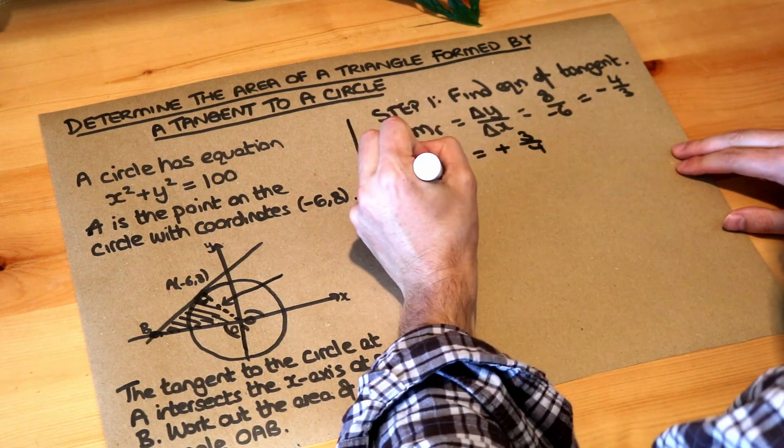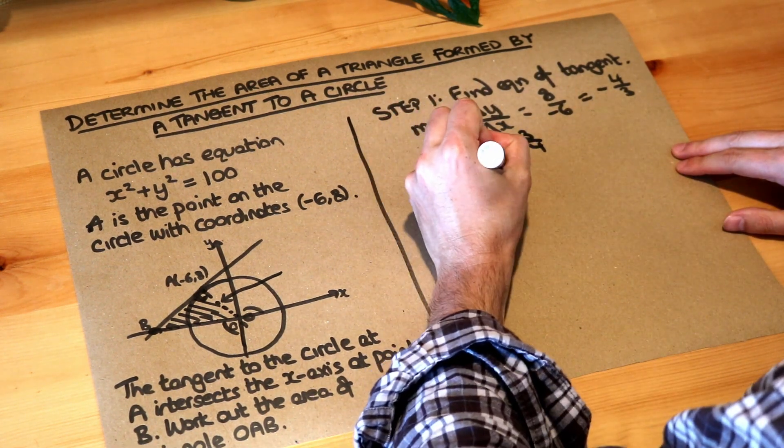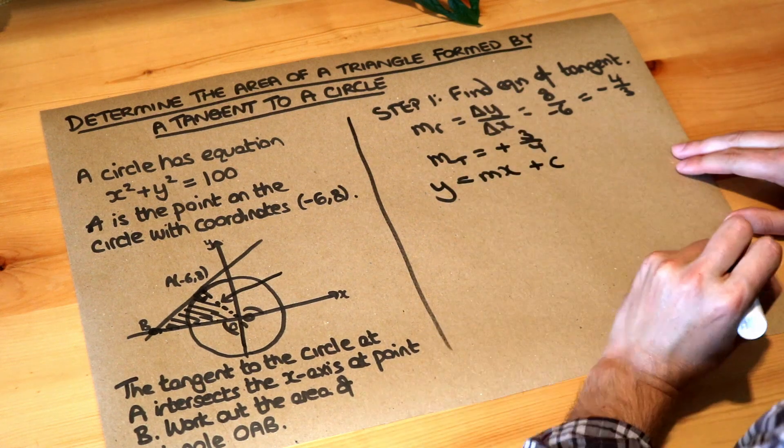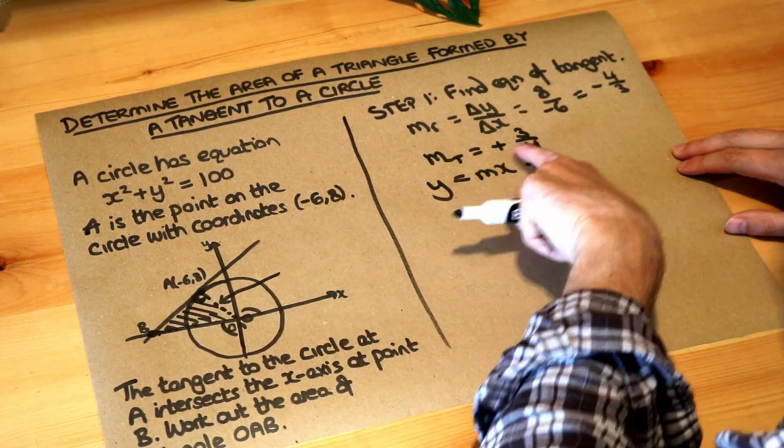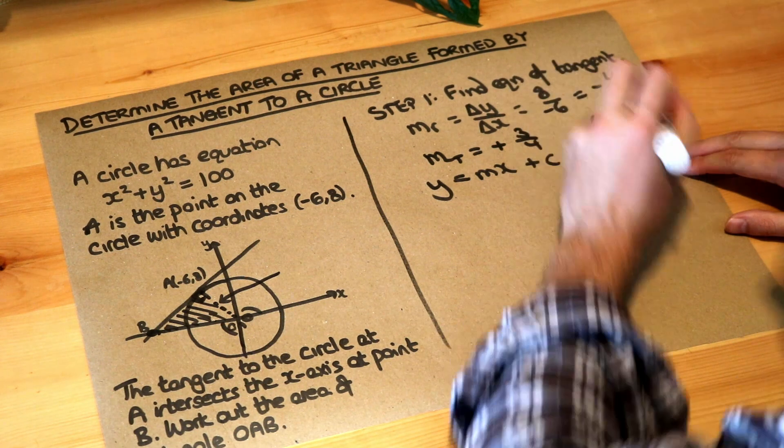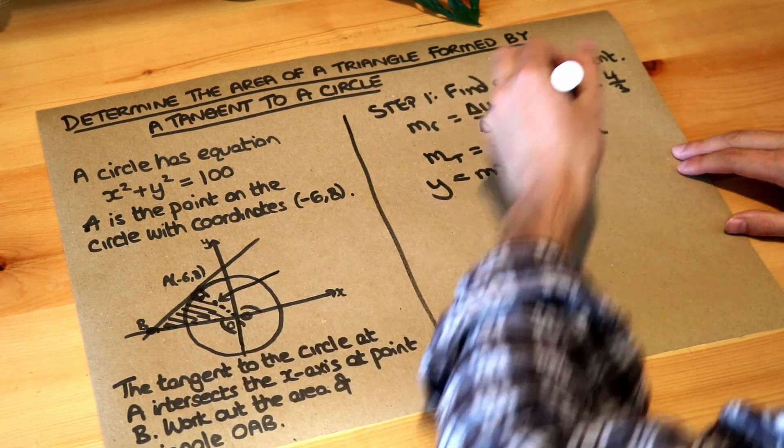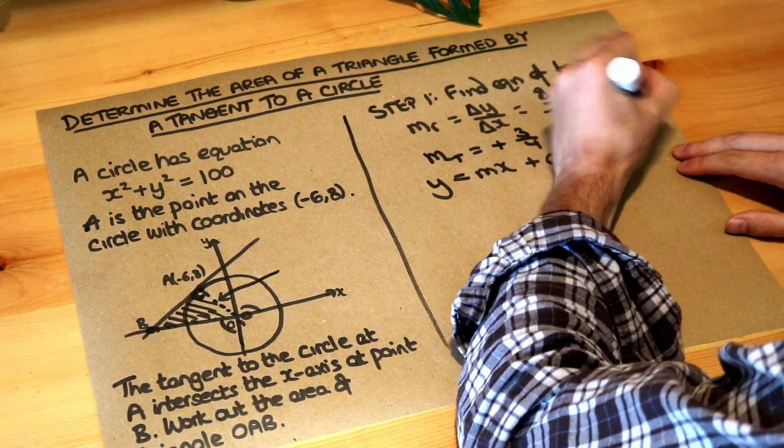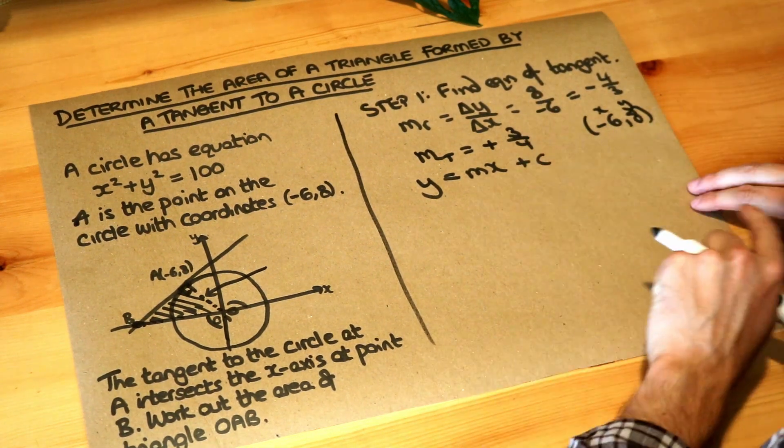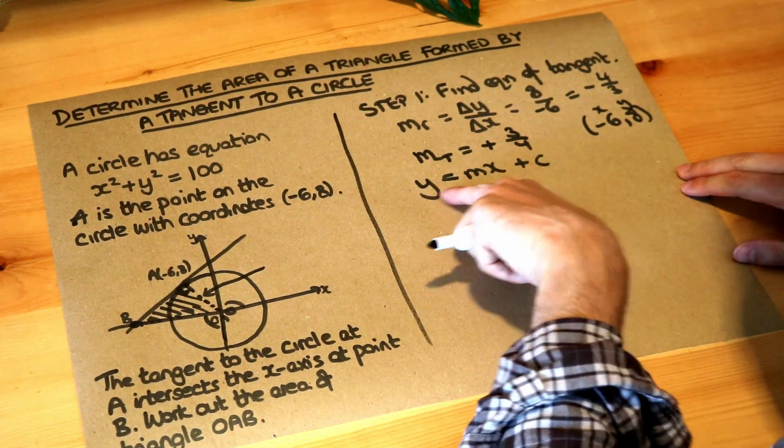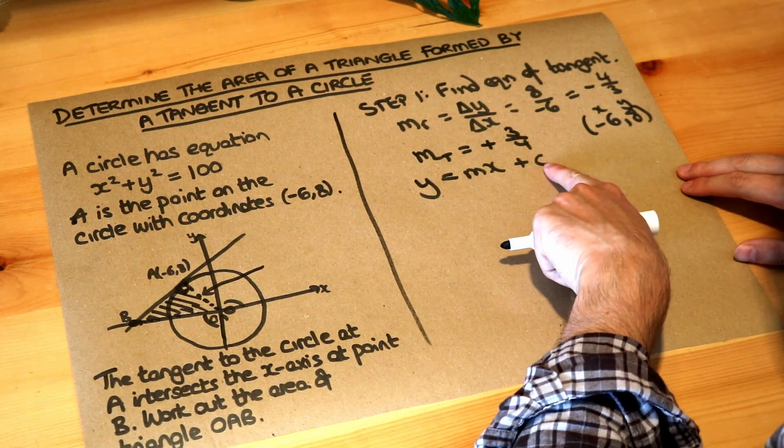And then we say, if y equals mx plus c is the equation of a straight line, we know that this line has this gradient, and it goes through the point A, which is minus 6, 8. So that's our fixed point on the line, that's our gradient. Let's just plug everything into the equation to work out what the y-intercept is, the c.